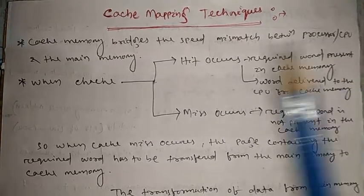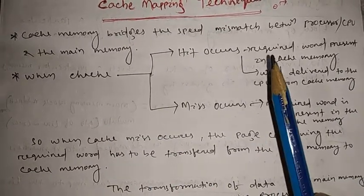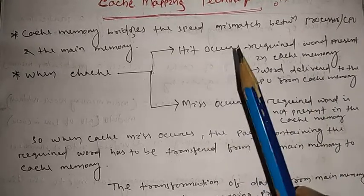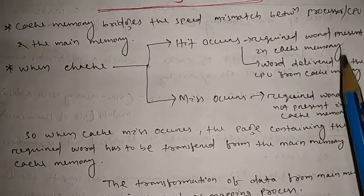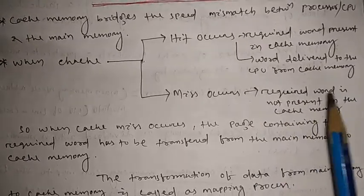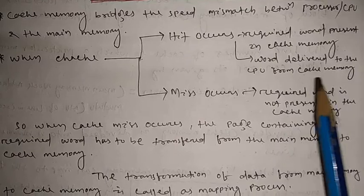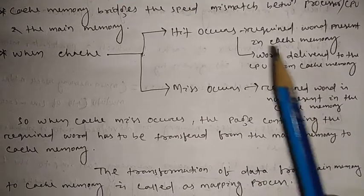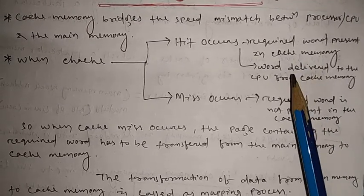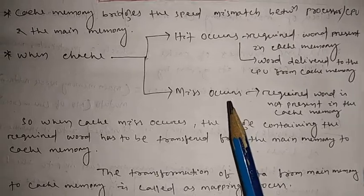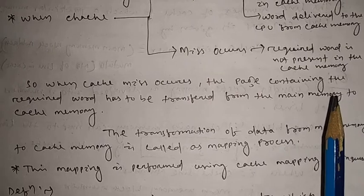Next — when does a cache hit occur, and when does a cache miss occur? A cache hit occurs when the required word is present in cache memory. A cache miss occurs when the required word is not present in cache memory and the word has to be fetched from main memory. If the data is present inside the cache memory, it is called a hit; if not, it is called a miss.